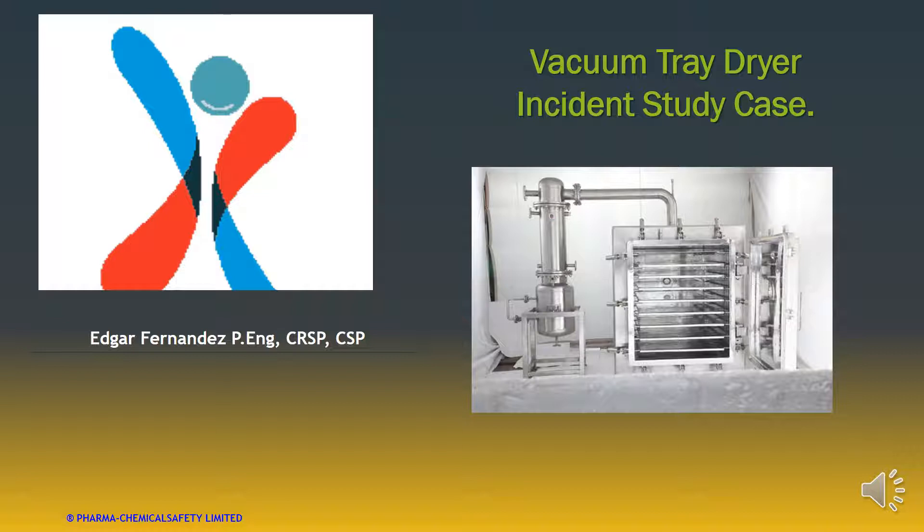The case is in the pharma chemical industry. I designed this case to see various aspects of safety that we need to take into account when we have drying operations that involve vacuum tray dryers. Our company XYZ has various stages to produce ABC finished product. One of the stages is transferring the intermediate product after filtration to a vacuum tray dryer. At this point, the material is called cake.